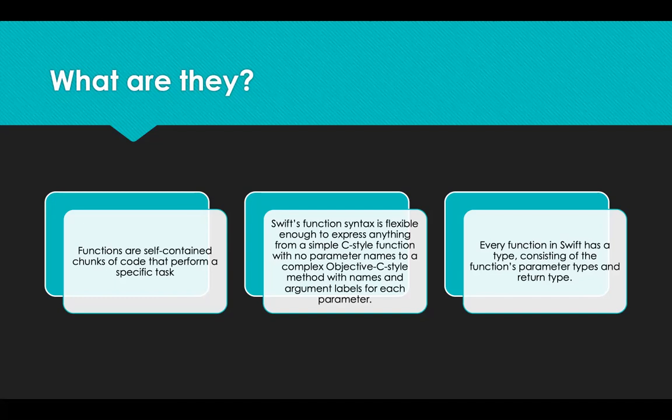Every function in Swift has a type consisting of the function's parameter types and return type. You can use this type like any other type in Swift, which makes it easy to pass functions as parameters to other functions and to return functions from themselves.